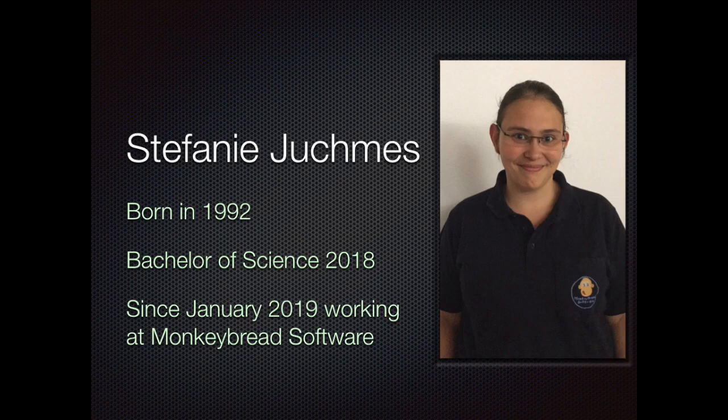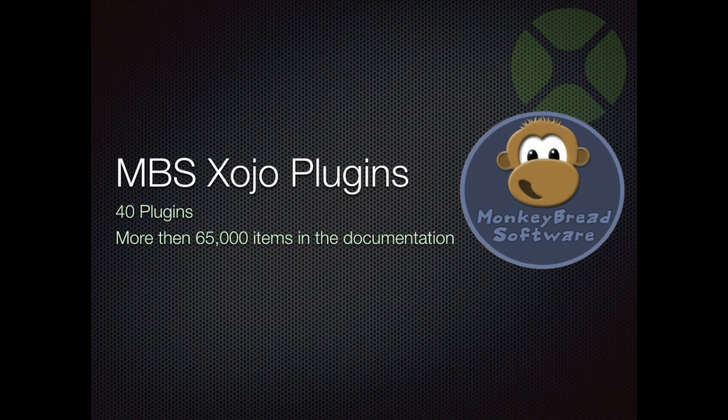Here are some facts about me. I was born in 1992 and I'm actually 27 years old. In 2018 I graduated with a Bachelor of Science degree from the University of Bonn. I studied Computer Science and since January 2019 I work for MonkeyBread Software that supplies the MBS plugins. The MBS SOJO plugins consist of 40 different plugins with more than 65,000 items in the documentation. It's a huge toolbox that you can use for your projects. I want to introduce today only one topic of the MBS Mac 64-bit plugin: SceneKit.